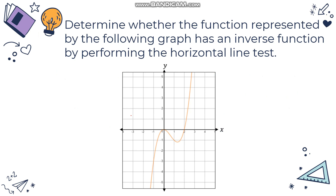Let's try an example: determine whether the function represented by the following graph has an inverse function by performing the horizontal line test. Given this graph, in order to identify if it has an inverse function we have to make sure it is one-to-one using the horizontal line test. All you have to do is draw a horizontal line anywhere along the graph. If you put the horizontal line on one side of the graph, you can see it intersects the graph at exactly one point.